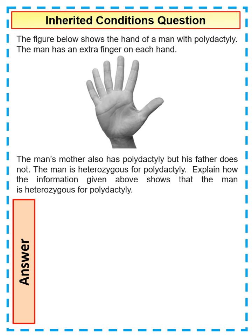This is a quick question on inherited conditions. The figure below shows a man who has polydactyly. Remember, polydactyly is when you have extra digits.